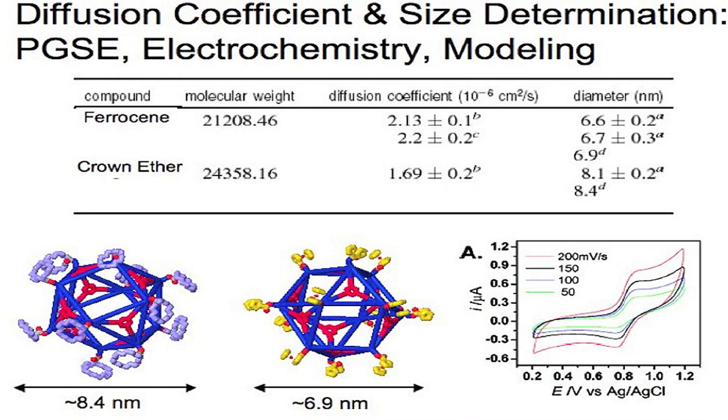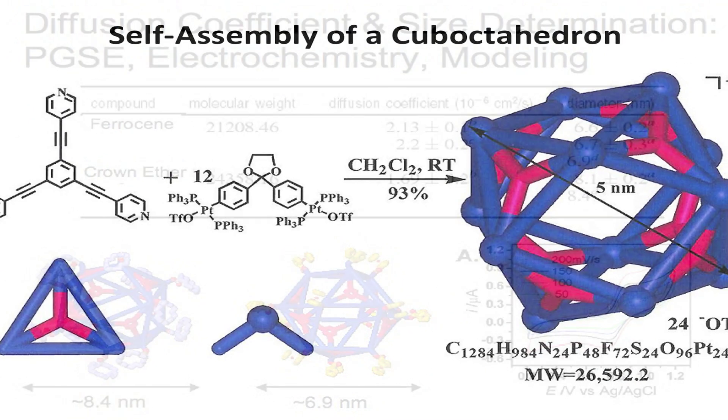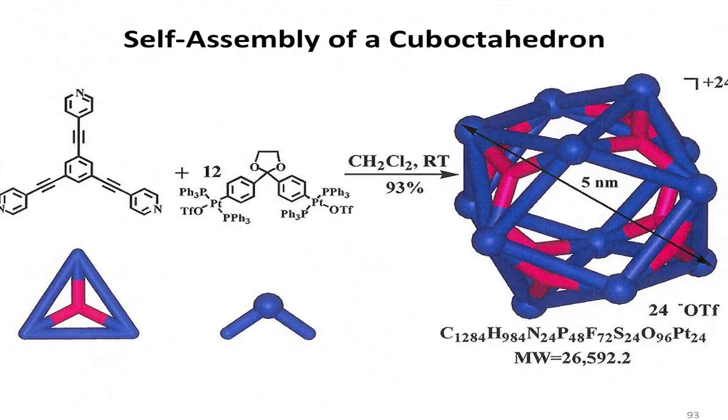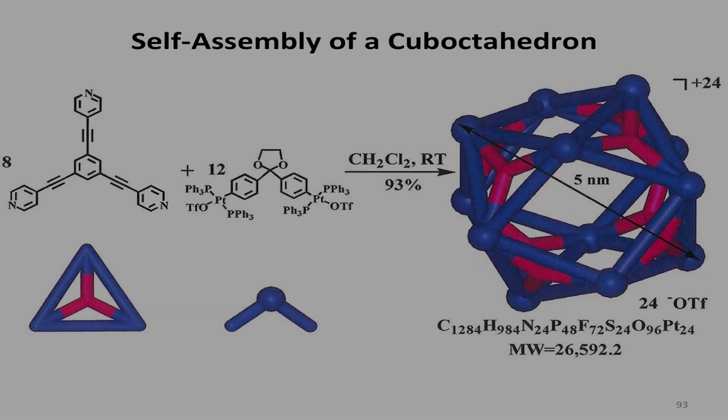We use the same building blocks to make a large diversity of molecules: different cages, different two-dimensional systems. We can get, for example, dodecahedra, cubo-octahedra, other three-dimensional cages, or simple two-dimensional structures like a triangle.